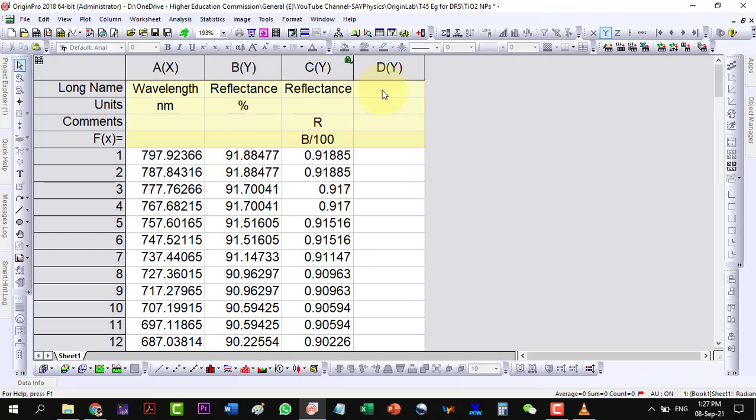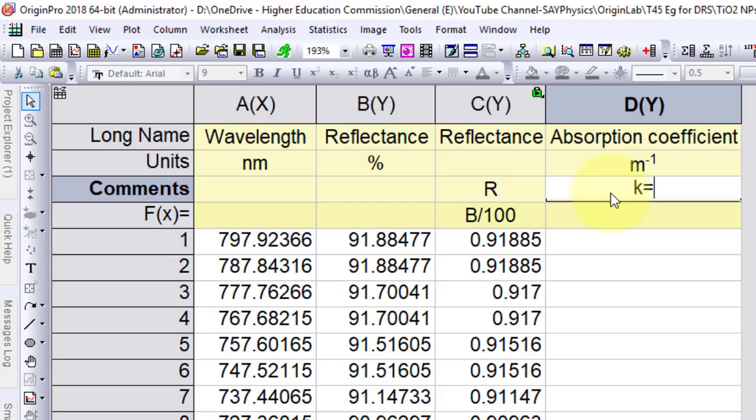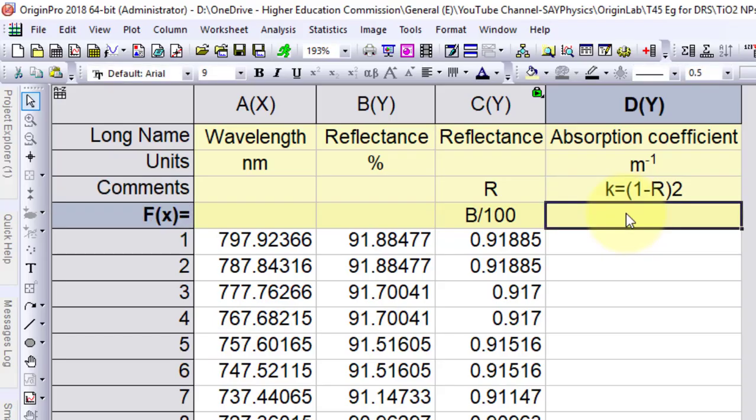Now we will calculate the absorption coefficient k in meter inverse, which is (1-R)², so we can write it as (1-C)².